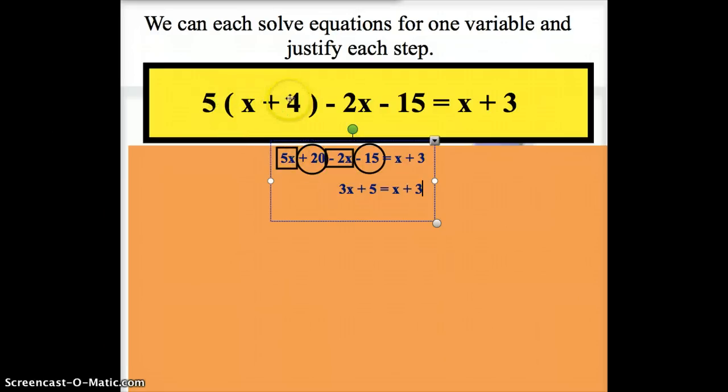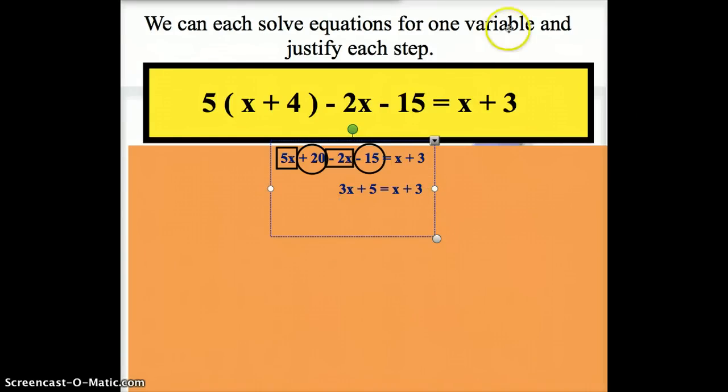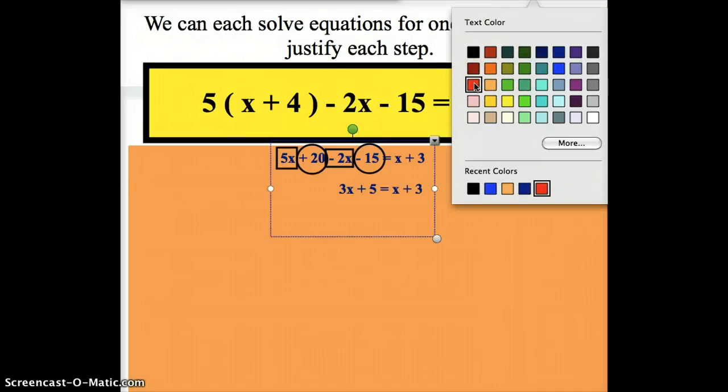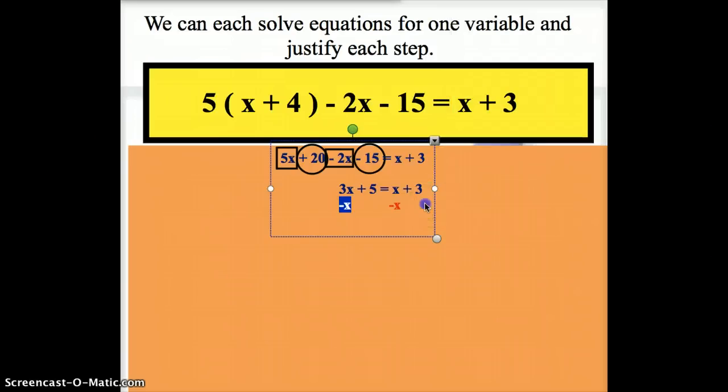So, first step, what I did to get this was I distributed. Second step was I combined my like terms on this side to get down to this point. Now, our third step is to move the smaller variable, this x right here, to the larger variable. Well, how do we do that? We do that using something called inverse operations. So, inverse operations means to do the opposite. So, I'm going to switch colors here to a fancy red for a moment. And the inverse operation, the opposite of a positive x on this side is a negative x. But whatever I do to one side of the equation, I must do to the other side.